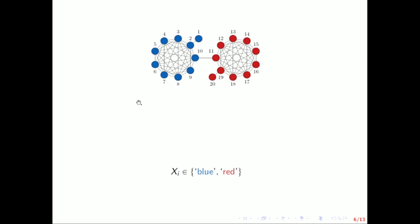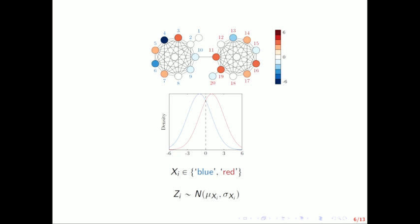What we observe is if you're true blue, some sort of realization associated with the blue density, if you're true red, some sort of associated with the red density. And then the task is, given our observed data, we want to infer those underlying labels.